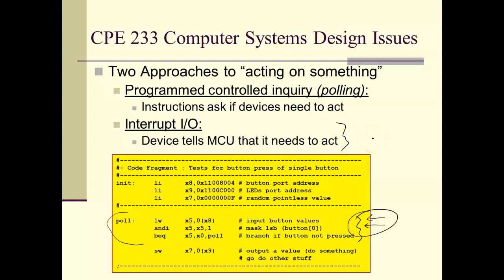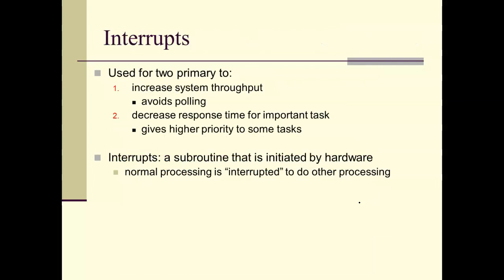The way around that is to make it interrupt driven. Instead of the program asking the external device, 'Hey, do you have something for me?', an interrupt allows the external device to tell the microcontroller, 'Hey, I've got something for you.' Interrupts are used for two reasons: they increase your system throughput by avoiding polling, and they reduce your response time. An interrupt is essentially a subroutine that is initiated by hardware. Interrupt code generally runs at higher priority than the normal code.